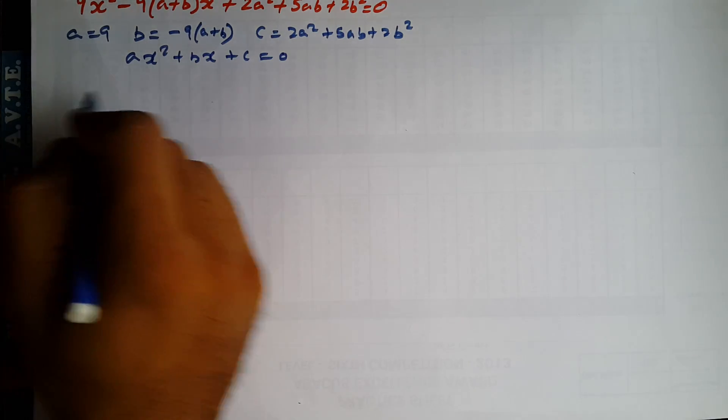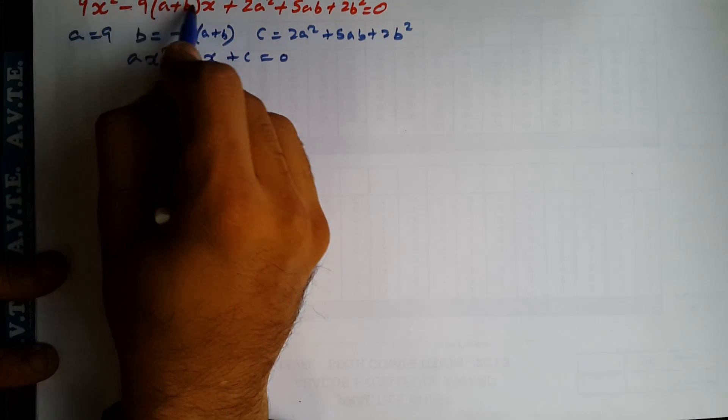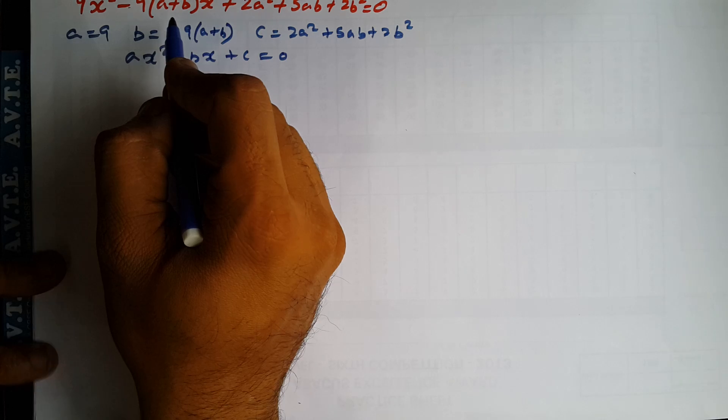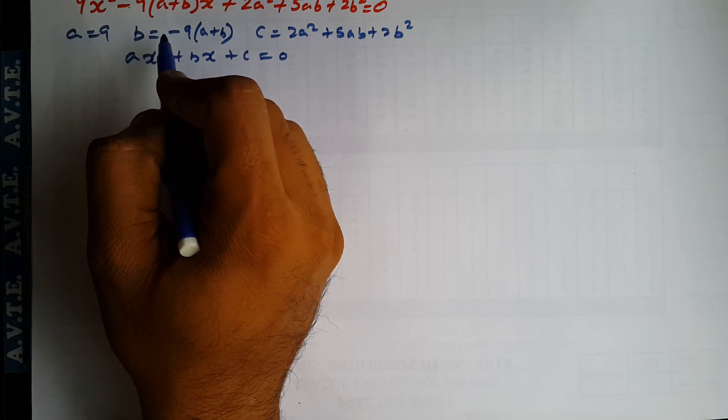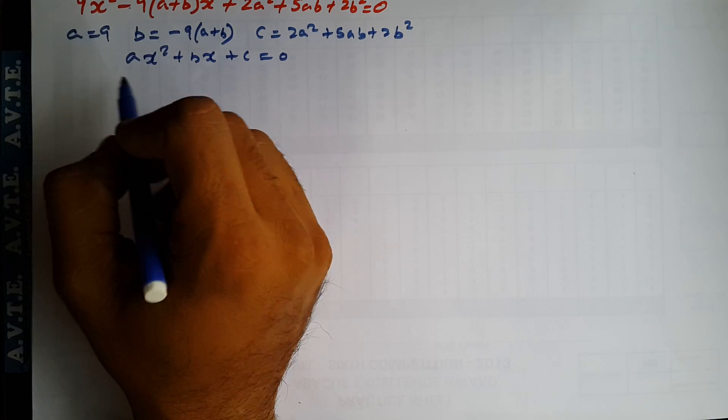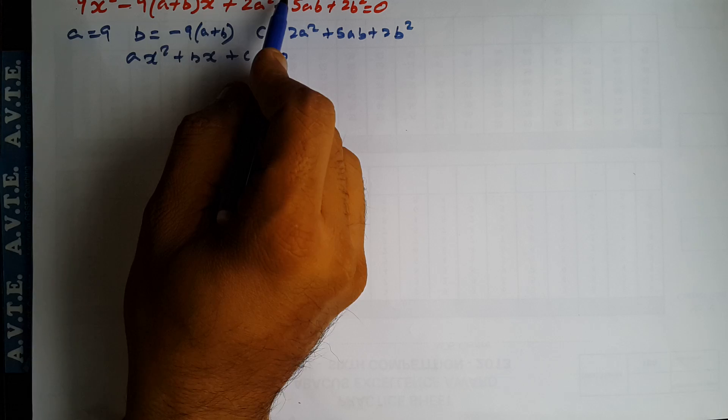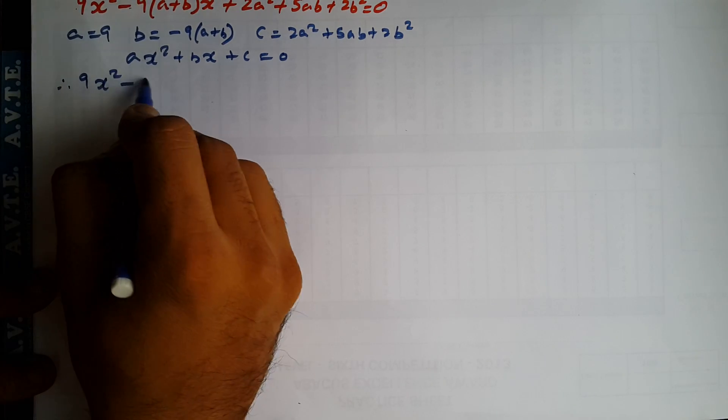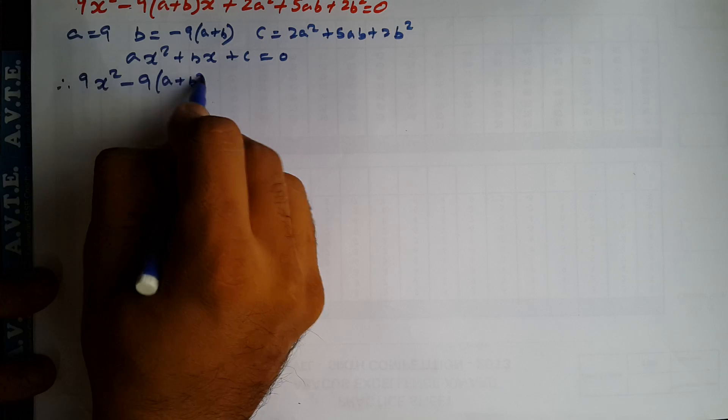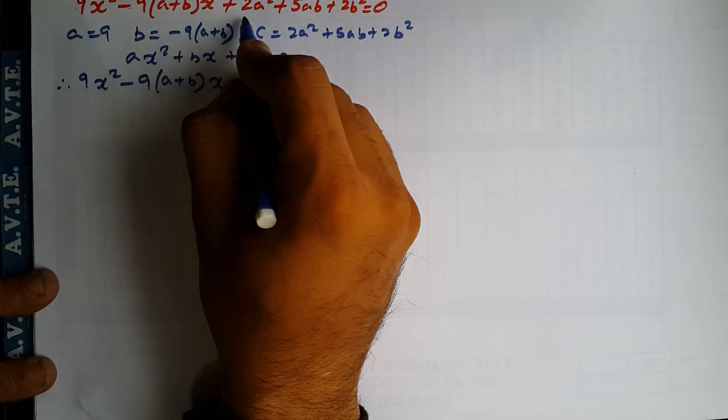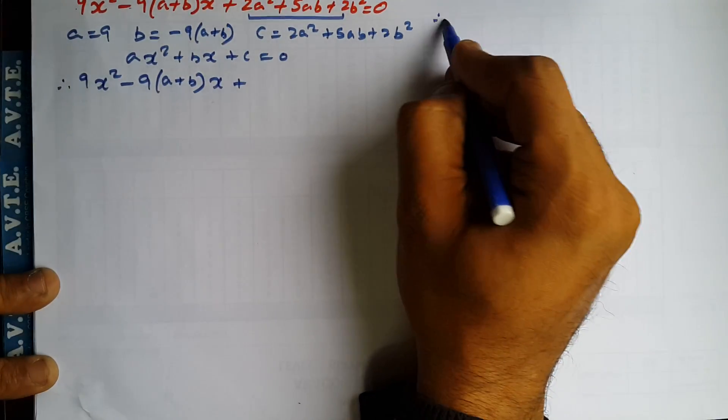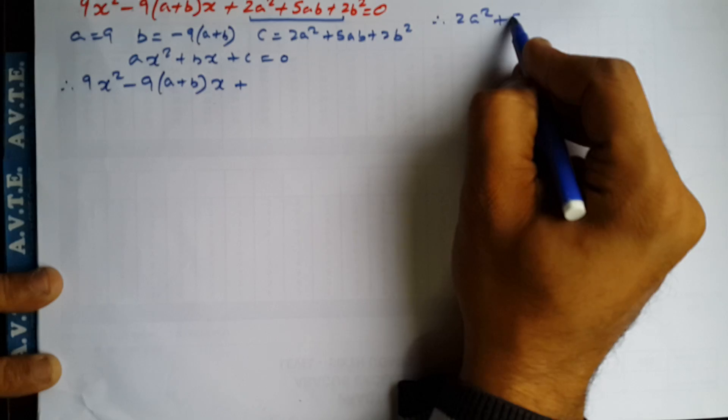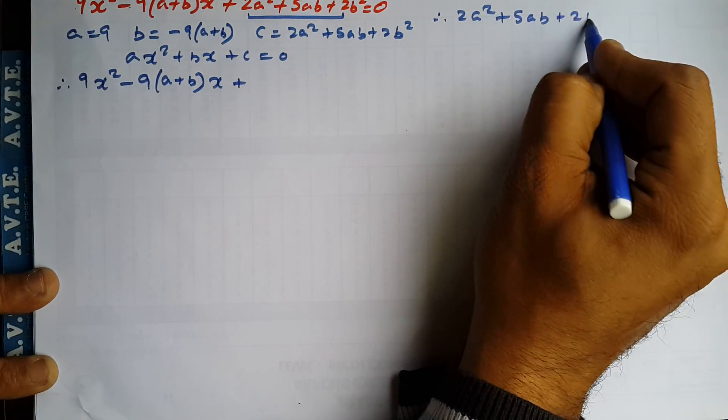So now we start. We have to factorize this in such a way the factors have addition this and those factors have multiplication this. In this question we first factorize this 2A square plus 5AB plus 2B square.